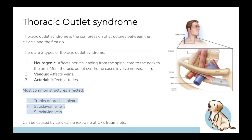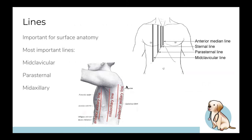Thoracic outlet syndrome: the thoracic outlet is like the superior thoracic aperture, but when you add the clavicle you get a tiny little space between the clavicle and the rib. A lot of structures pass through here, and if you get inflammation or trauma they can get compressed. There are three types depending on whether it affects your nerves, veins, or arteries. The most commonly affected structures are the trunks of your brachial plexus, and your subclavian artery and subclavian vein - subclavian meaning below your clavicle.